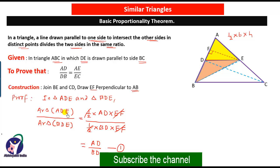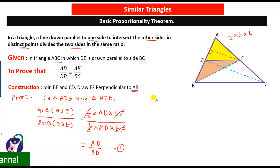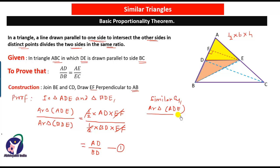So area of triangle ADE upon area of triangle BDE equals AD upon BD. Similarly, if you take triangle ADE and triangle DEC, then area of triangle ADE divided by area of triangle DEC equals AE upon EC. Let this be equation 2. Now we have to show that AD upon BD equals AE upon EC, which is possible when these two ratios of areas are equal.